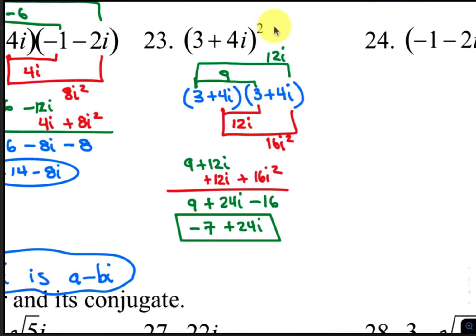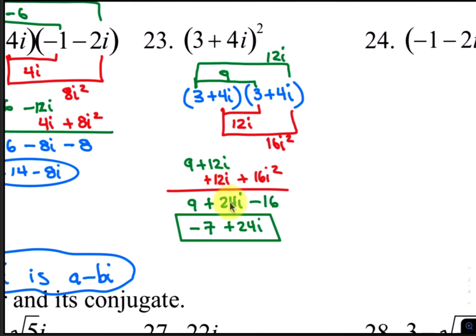For number 23, you're squaring 3 plus 4i, which means you're multiplying it times itself. Distributing: 3 times 3, 3 times 4i, 4i times 3, and 4i times 4i. The result is 9 plus 12i plus 12i plus 16i squared. 12i and 12i add up to 24i, and 16i squared becomes negative 16. Combining negative 16 and 9 gives negative 7, so your answer is negative 7 plus 24i.